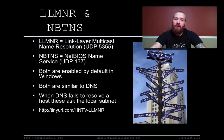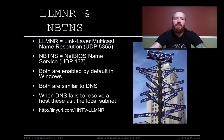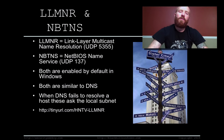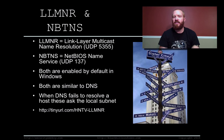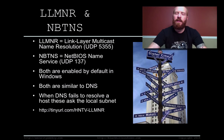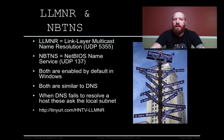LLMNR and NBT-NS. LLMNR, as I said, is Link Layer Multicast Name Resolution, operating on UDP port 5355. NBT-NS is NetBIOS on UDP 137. Both are enabled by default in Windows. LLMNR came along with Vista; NetBIOS has been around a bit longer. Both are very similar to DNS. The key difference is that LLMNR also does IPv6 resolution, and NetBIOS doesn't.